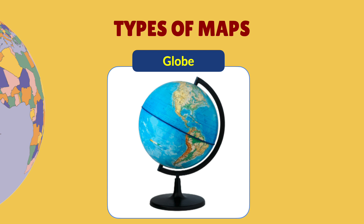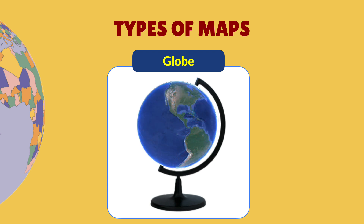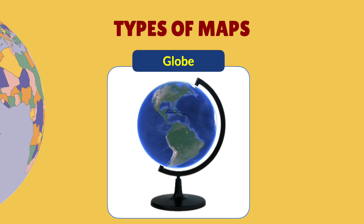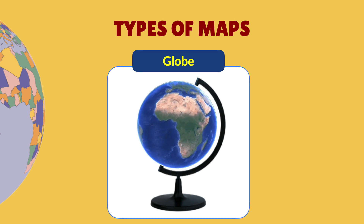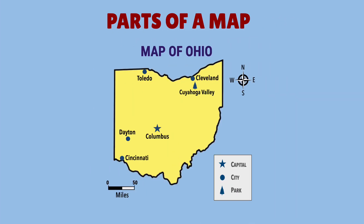There's a special kind of map called a globe. A globe shows a three-dimensional representation of the Earth, and it really helps us get a better idea of where places are. If you spin a globe, you can get an idea of how the Earth rotates. Now a map isn't only a drawing of a place — it usually also has features to help us understand the map.